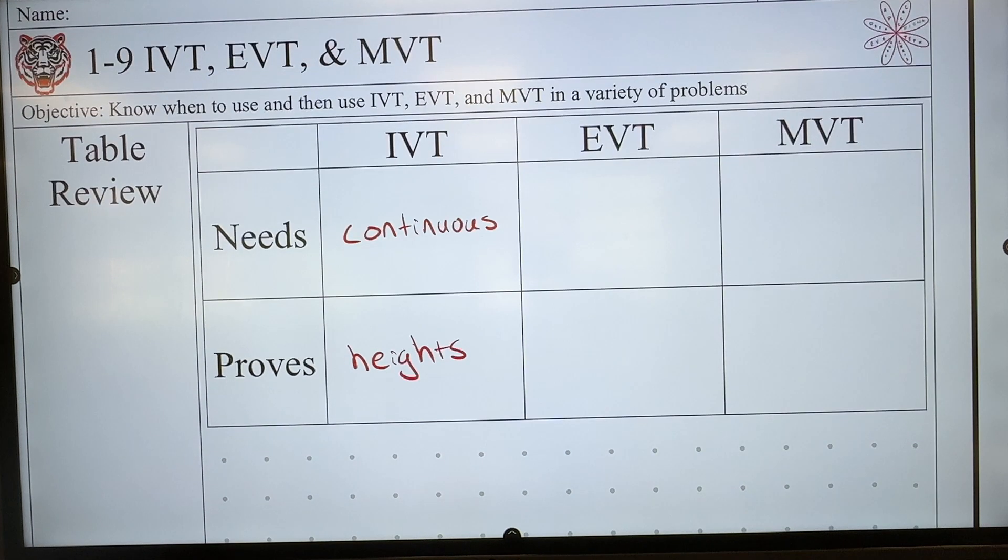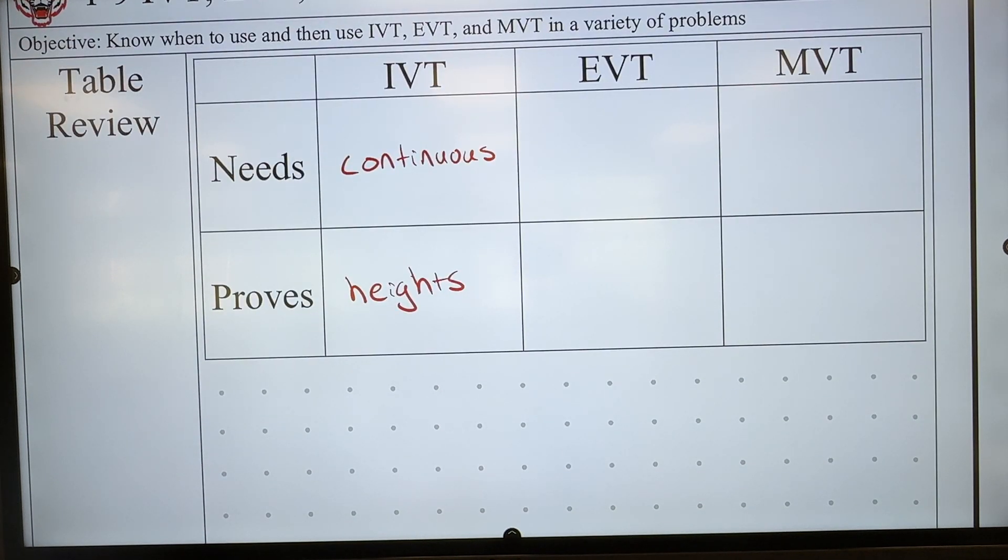If you want a little bit more of an explanation, I can do that down beneath. In general, we'll have two points. Something like this. And then we make a rectangle between those two points. And every single height inside that rectangle hits at least one time. So that's our picture representation of IVT. It proves heights, but it has to be continuous.